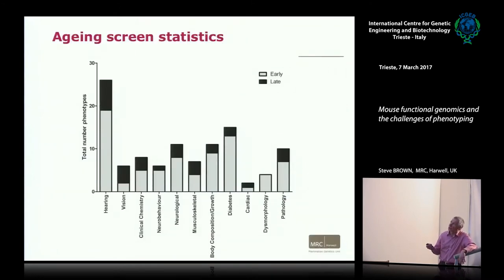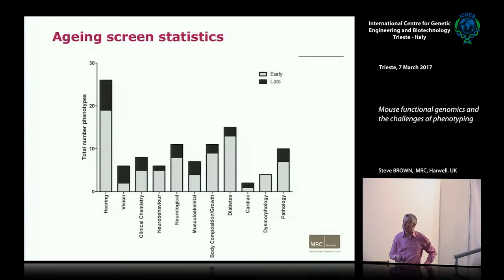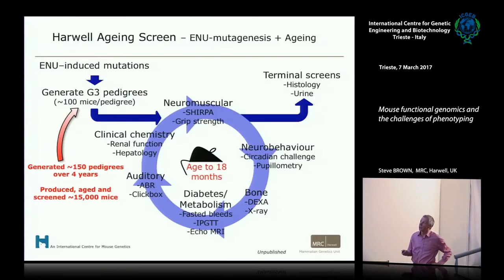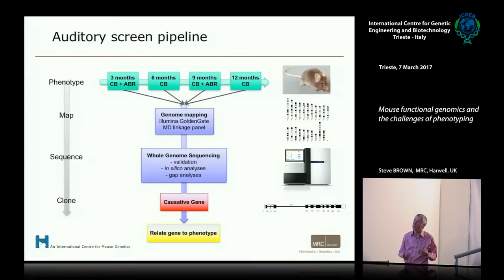If we look across the early and late phenotypes in our screen, the late phenotypes covered all the different phenotype areas we were interested in, though some more than others. Importantly, we were getting new gene information about late-onset disease across all major biological systems. We generated 150 pedigrees over four years — an enormous number, about 15,000 mice — all screened recurrently through all of these tests.